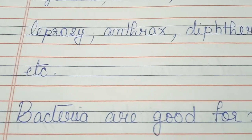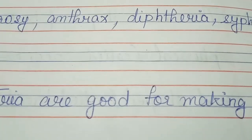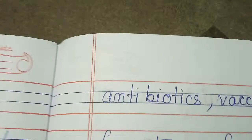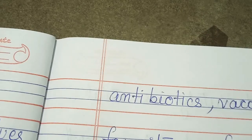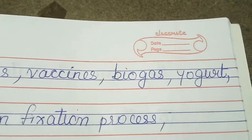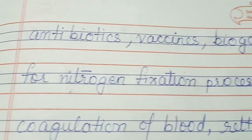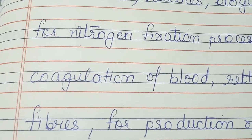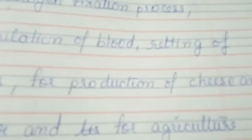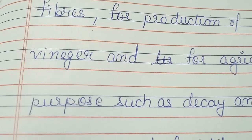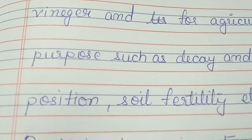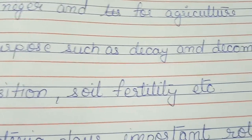Bacteria are beneficial for making antibiotics and vaccines, biogas, yoghurt, nitrogen fixation, coagulation of blood, retting of fibres, and production of cheese and vinegar. They are also used for agriculture purposes such as decay and decomposition, soil fertility, and more.